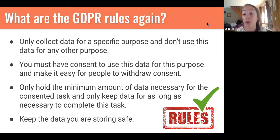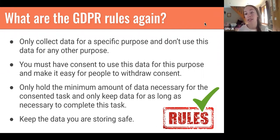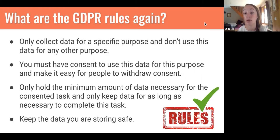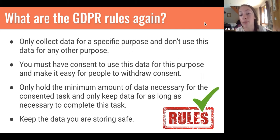You must have consent to use the data for the purpose you've explicitly stated, and you must make it really easy for people to withdraw consent. This is where Mailchimp makes things easy — when you build landing pages you have an opt-in form where you explicitly say what you're going to use the data for, people can opt in and give their consent, and with Mailchimp emails you've got an easy unsubscribe option so it's really easy for them to withdraw consent. This is a positive thing for customer trust.